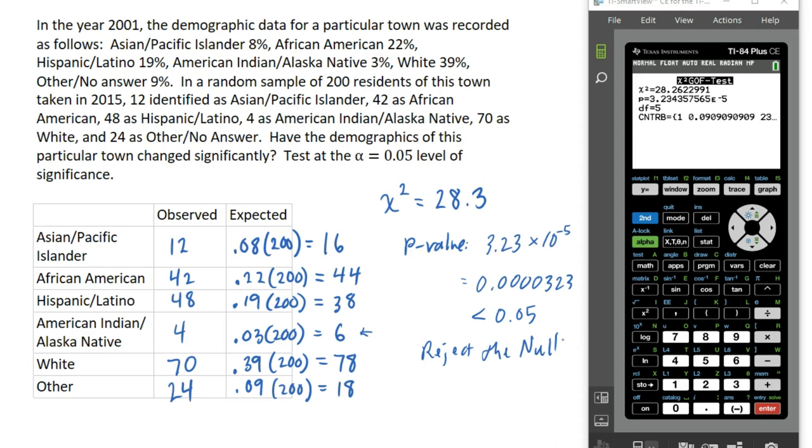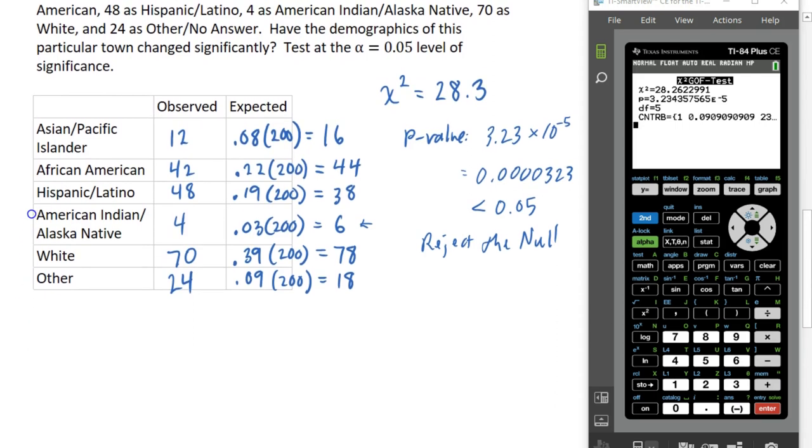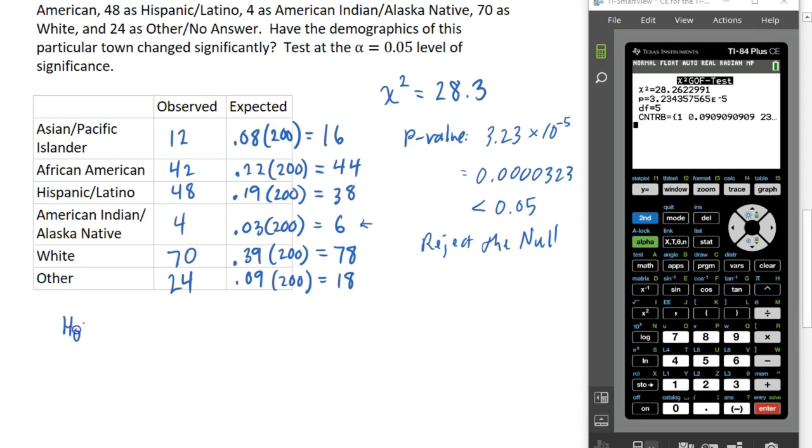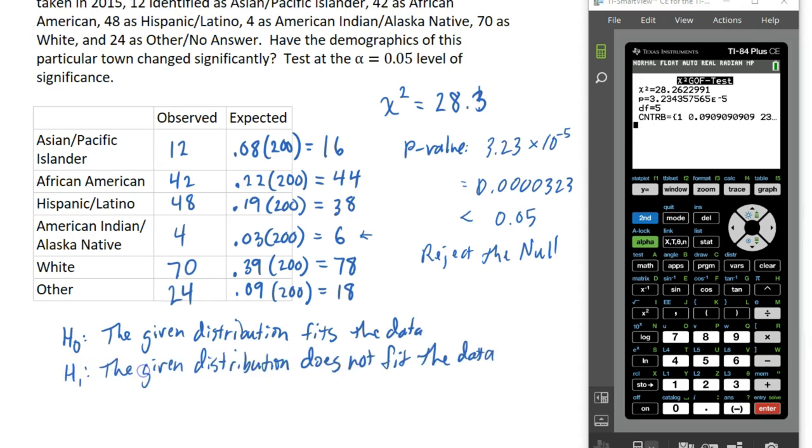When we do a goodness of fit test, your null hypothesis is going to be that the given distribution fits or that the given distribution is accurate. So the given distribution fits the data. Your alternate hypothesis is going to be that the given distribution does not fit the data. So when you do a goodness of fit test, these are the hypotheses we use.